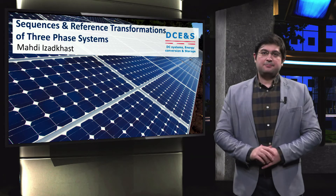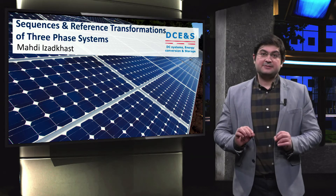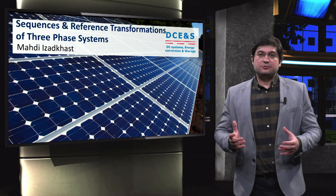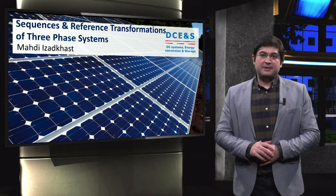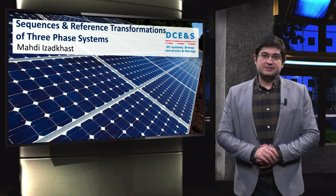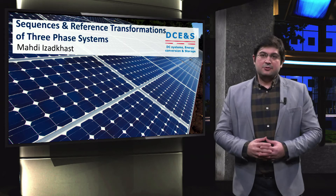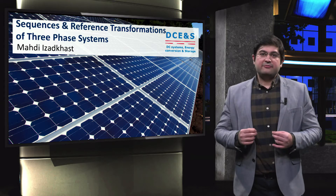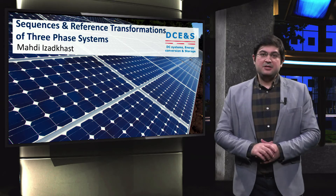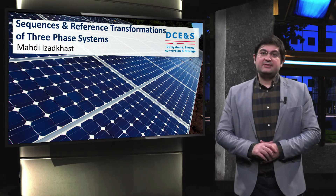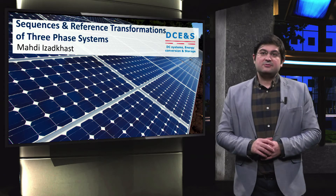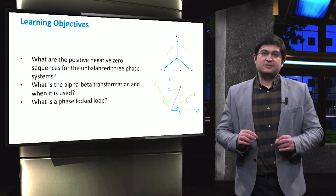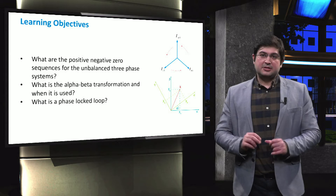In order to better understand the power quality and protection aspects of microgrids in the coming weeks, here we shortly introduce the sequences of the unbalanced 3-phase AC systems. In order to better understand how local control using phase-locked loop is implemented in microgrids, we take a step back to address the reference transformations in the 3-phase systems. We address the following three learning objectives.